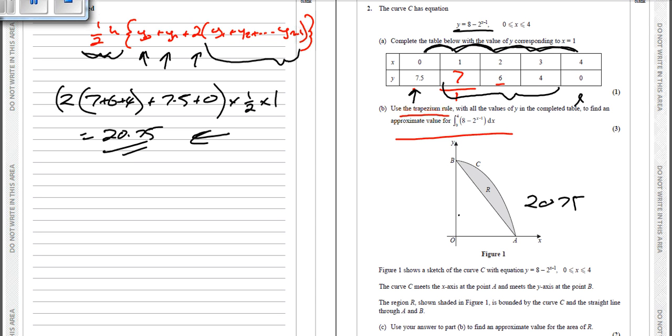So we know that this is between 0 and 4, and we need to know what the height of this triangle is. Now the height is the Y value when X is 0. So when X is 0, the Y value is 7.5. So the area of this triangle is 7.5 times by 4 divided by 2, which equals 15. So if the area of the triangle is 15 and the area underneath this curve is 20.75, we're going to do 20.75 take away 15, and we end up with 5.75. That's the answer to that one.